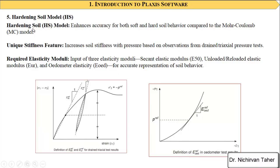Another constitutive model is the hardening soil model, which is a very advanced soil constitutive model compared to the Mohr-Coulomb model. In this model, three elasticity moduli are used: E50 (the secant modulus of the soil), the unloading-reloading elasticity modulus, and the oedometer elasticity modulus, which can be obtained from oedometer or consolidation tests. This model is much better than the Mohr-Coulomb model.